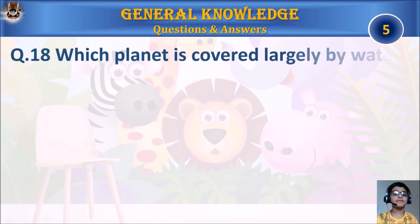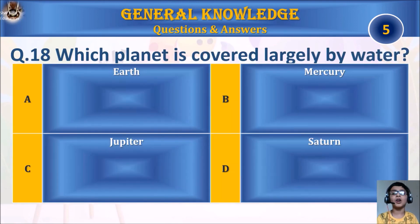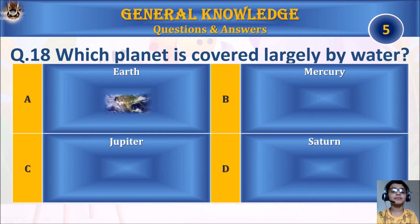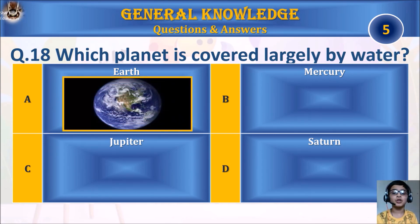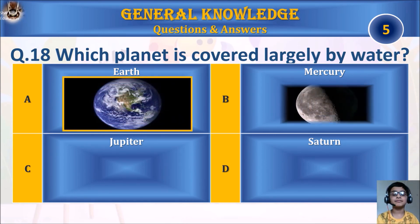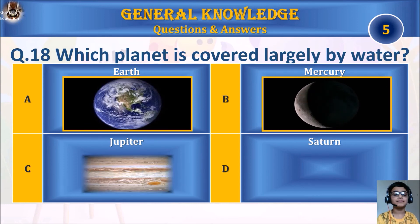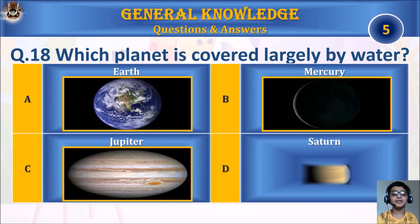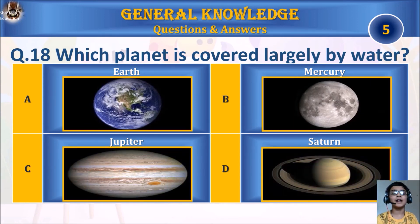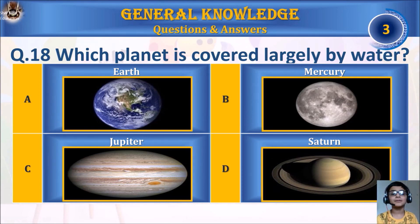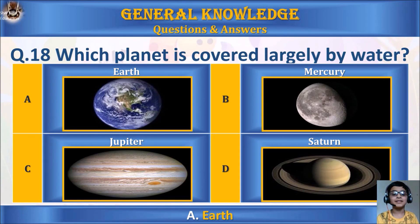Question 18: Which planet is covered largely by water? A. Earth, B. Mercury, C. Jupiter, or D. Saturn. Your time starts. The answer is A. Earth.